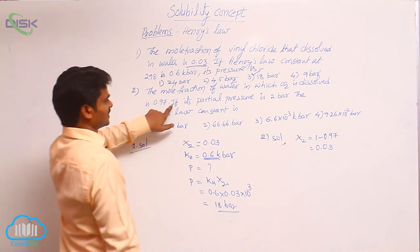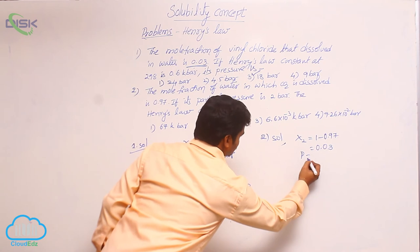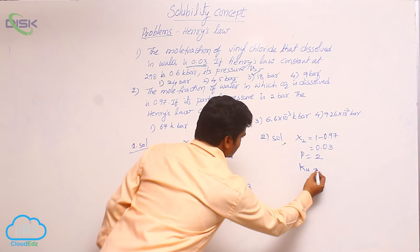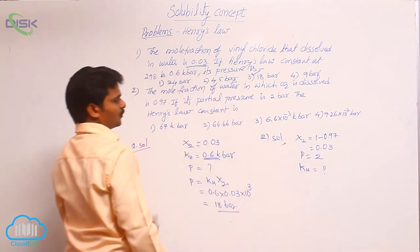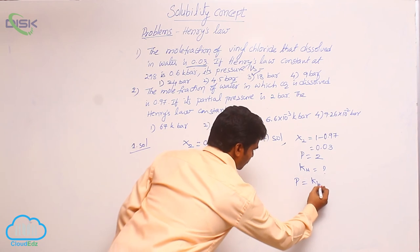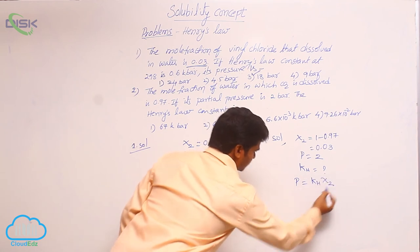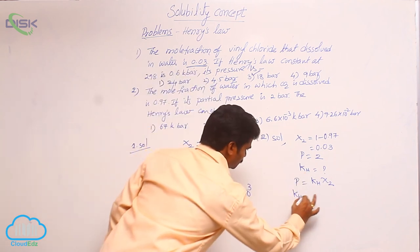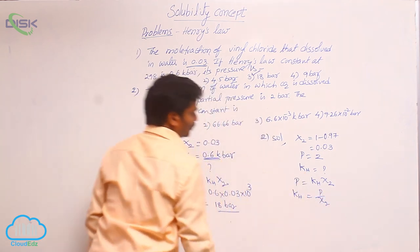Next, if its partial pressure is 2 bar, pressure is also given as 2 bar. Then what is Henry's law constant KH? How to find out? Use the direct formula: P is equal to KH into mole fraction of the gas. That means KH is equal to P by mole fraction of solute.